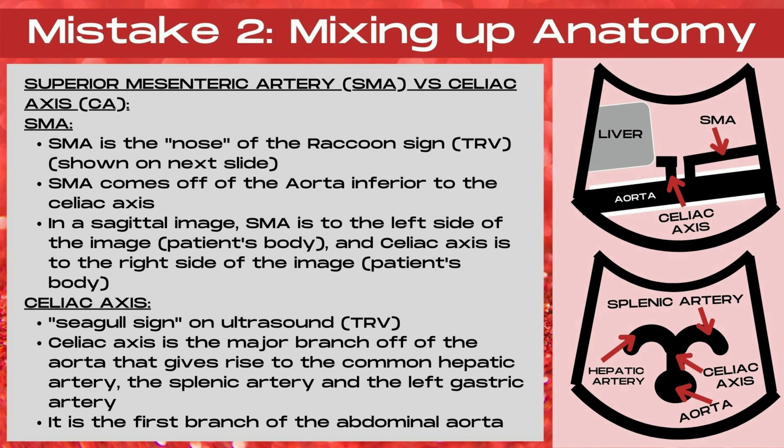In the bottom image is the ultrasound seagull sign. The aorta makes up the head of the seagull. The body of the seagull is the celiac axis, with the splenic artery and the hepatic artery serving as the wings of the seagull, and we can see this in a transverse ultrasound plane.